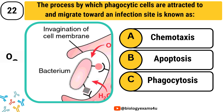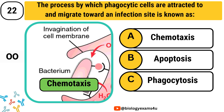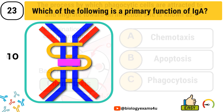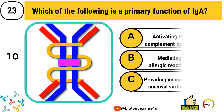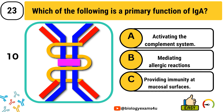Question number 23. Which of the following is a primary function of IgA? Option A, activating the complement system. Option B, mediating allergic reactions. Option C, providing immunity at mucosal surfaces. The correct answer is providing immunity at mucosal surfaces.